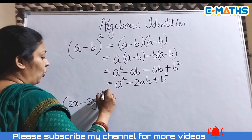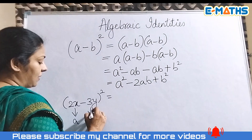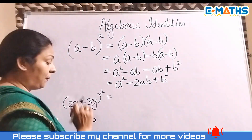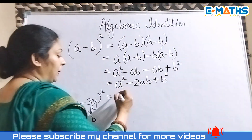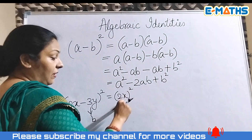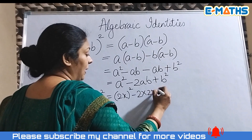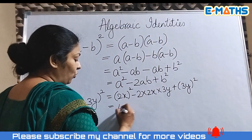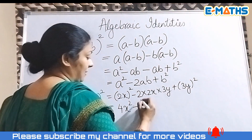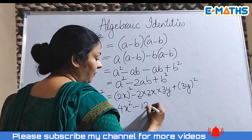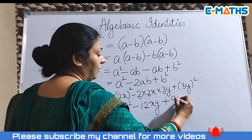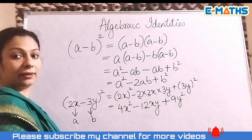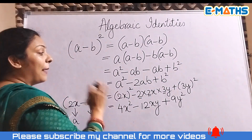For example, (2x - 3y)²: here a = 2x and b = 3y. Substituting into the identity: (2x)² - 2·(2x)·(3y) + (3y)². This gives 4x² - 12xy + 9y². Just remember: the plus identity has all positive terms, while the minus identity has the middle term negative.